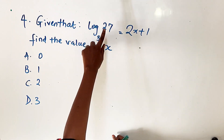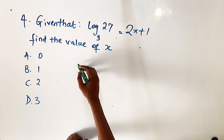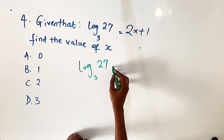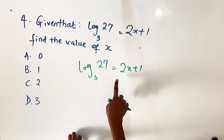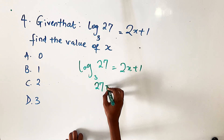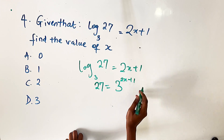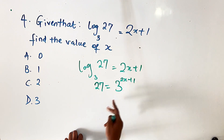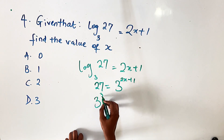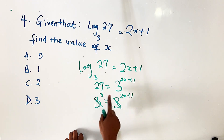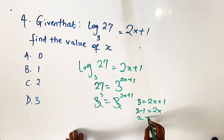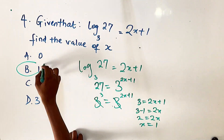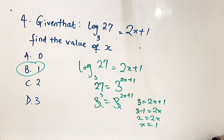Question number four: given that log 27 base 3 equals 2x + 1, find the value of x. We write: 27 = 3^(2x+1). Since 27 = 3³, we have 3³ = 3^(2x+1). Equating powers since the bases are the same: 3 = 2x + 1. Bringing 1 over: 2 = 2x, so x = 1. B is our answer.